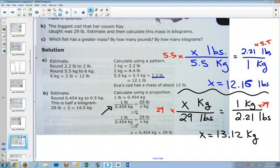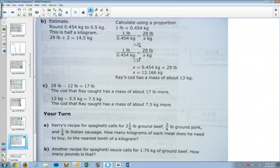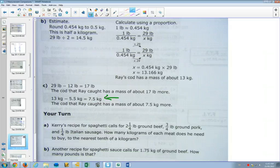So which fish has a greater mass? This one, 13.12 kilograms compared to 5.5? It's quite a bit more. It's about seven, eight kilograms more. So if we look at the answer in the textbook, sure enough, they just subtract the two. You can either say it's seven and a half kilograms more. Or if you subtracted the two in pounds, you could say that it was about 17 pounds more.